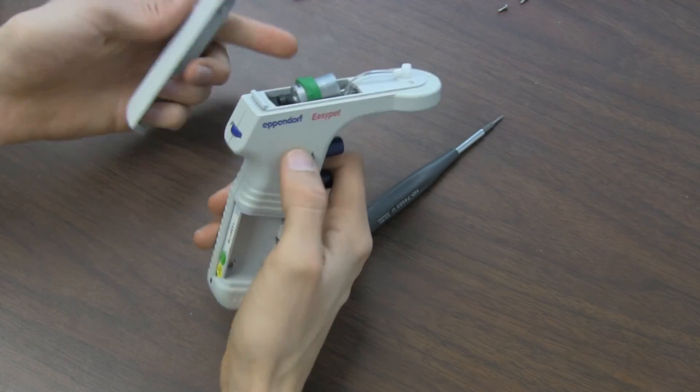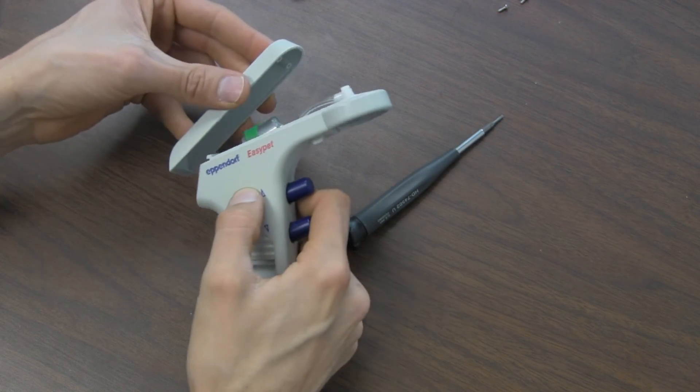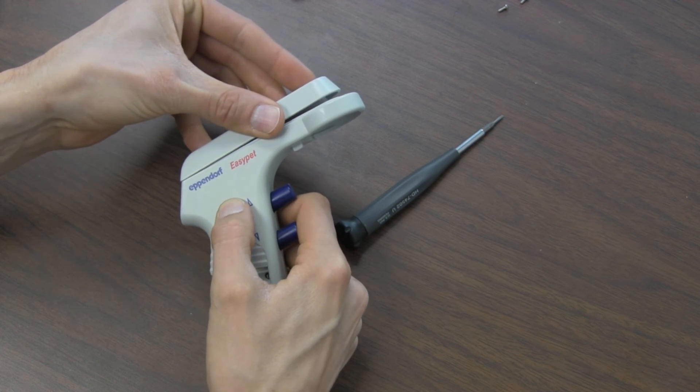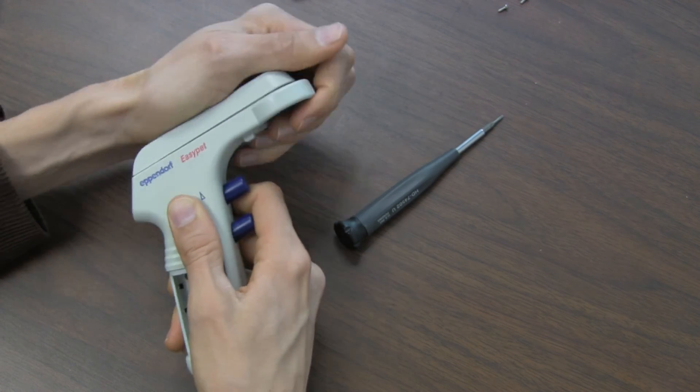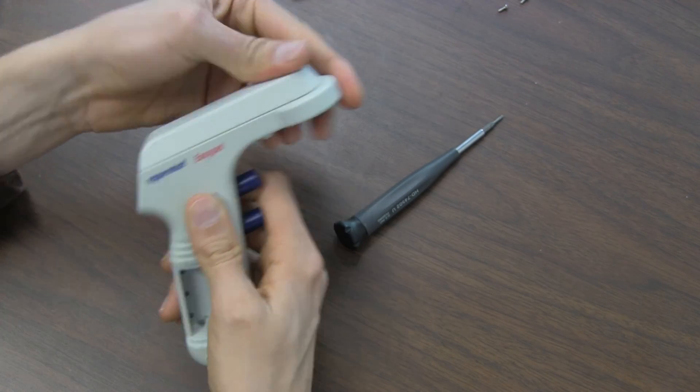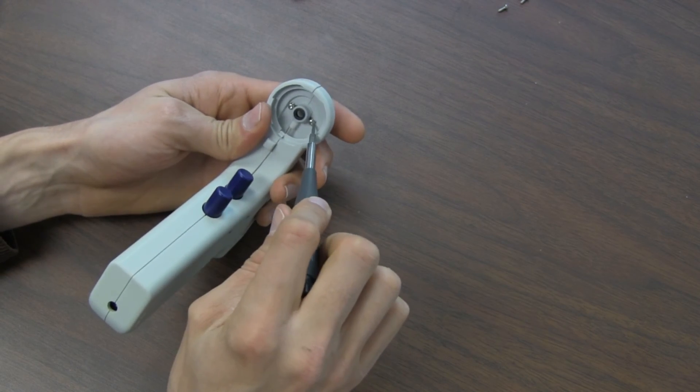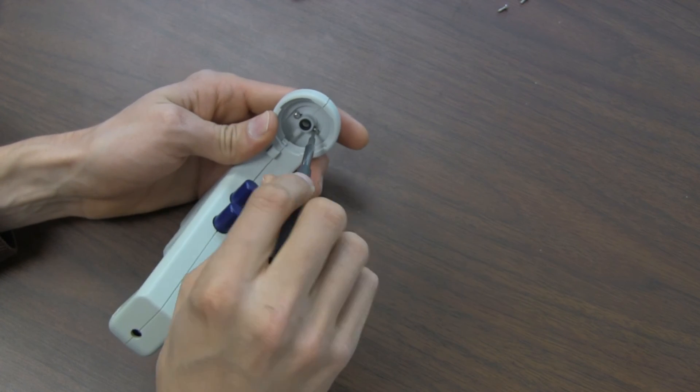Then you're going to take this top that you removed earlier, slide the back on first and push the front down. Make sure it's well seated. These screws stayed in place here so it's pretty easy to put them back in.